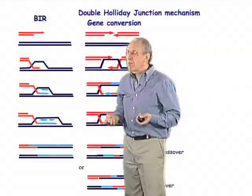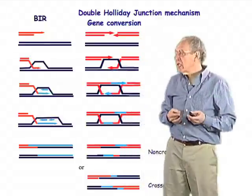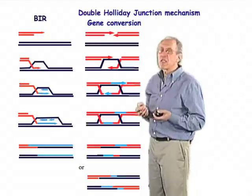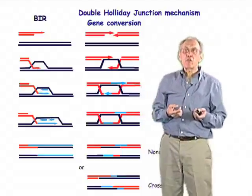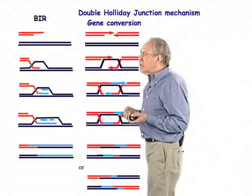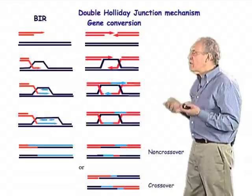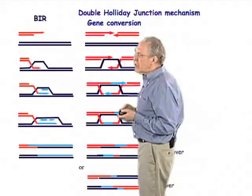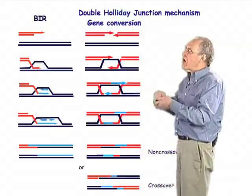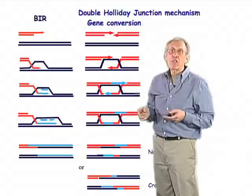The mechanism by which gene conversion takes place is in some ways similar to, but different from, the mechanism of break-induced replication. Here's a mechanism first suggested by Michael Resnick in 1976 and then refined by Szostak, Orr-Weaver, Rothstein, and Stahl in 1983, which has gone through a lot of modifications to the form shown here.